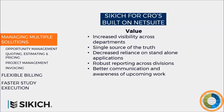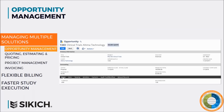As we go through the next sections, we'll break this down into a process we call bid-to-bill, walking through opportunity management, quoting, estimating and pricing, project management, and invoicing. The bid-to-bill process is simply how well a CRO organization can bid a project, execute it, and ultimately invoice it — and the opportunity record is typically the starting point.